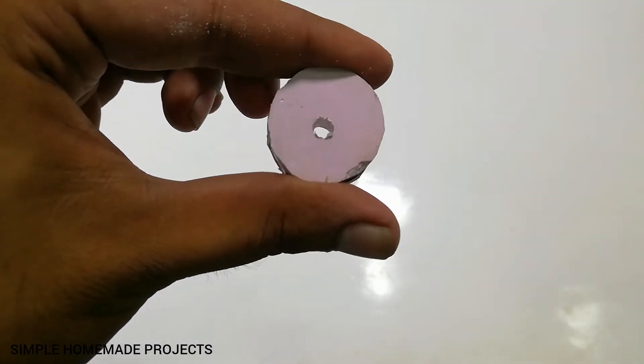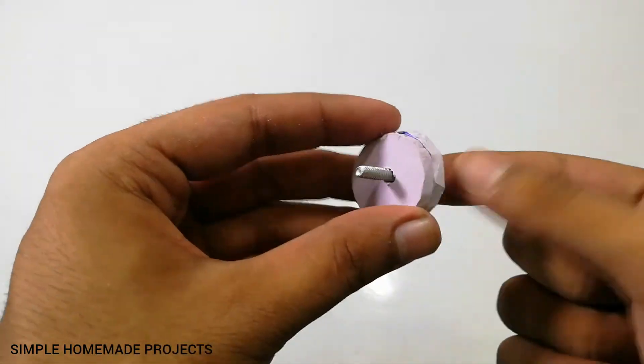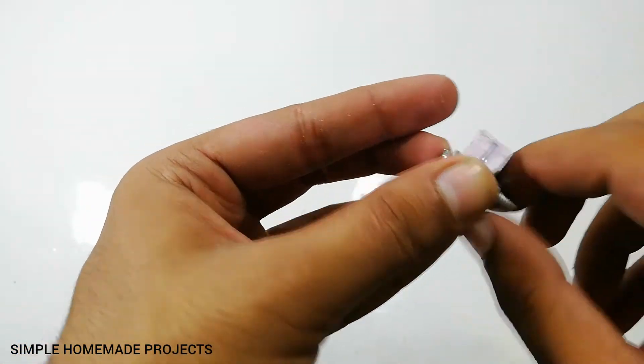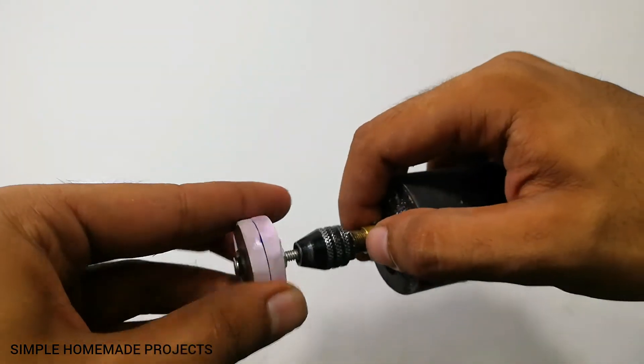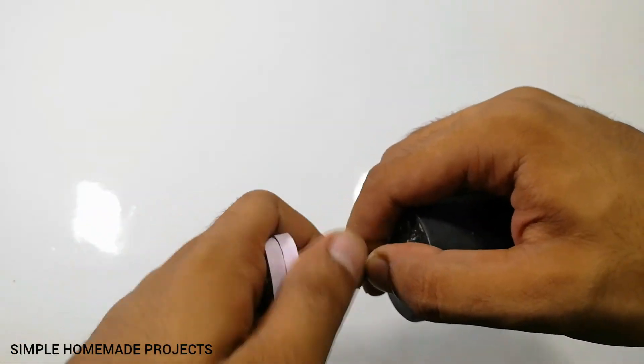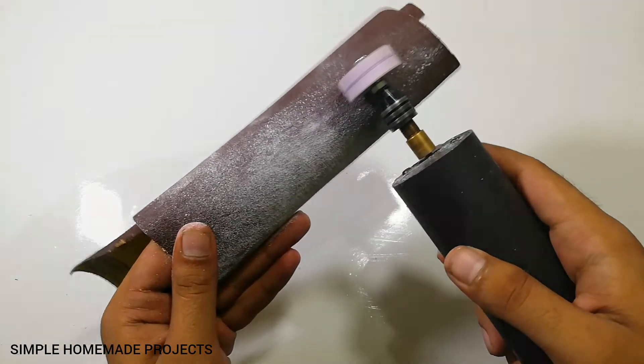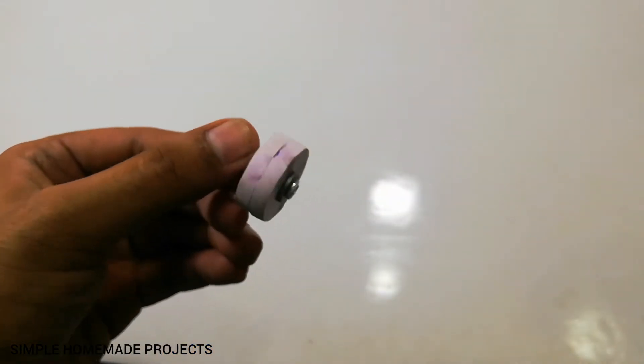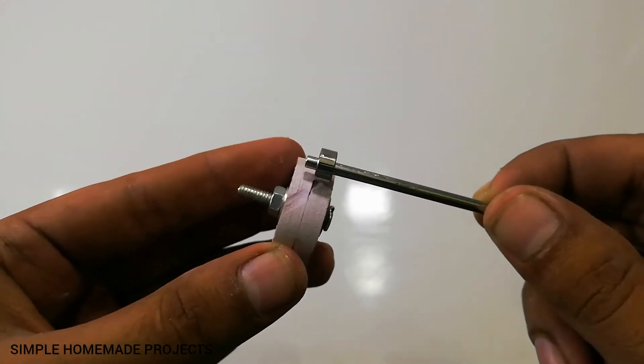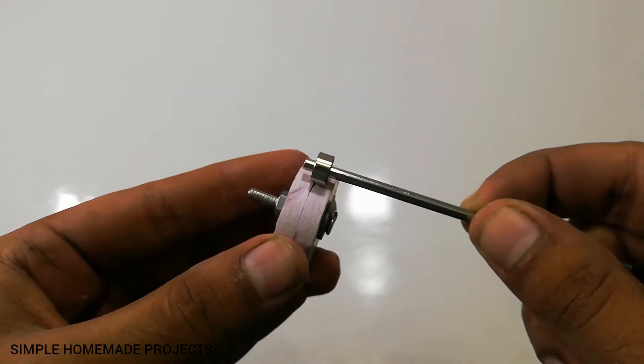Drill a hole in the center, insert a bolt in it, and tighten up the nut. Now insert it in a Dremel or a drill machine and sand it to make it perfectly round. Now make a depression in it according to the thickness of the bearing.